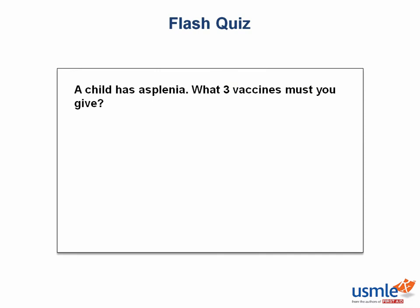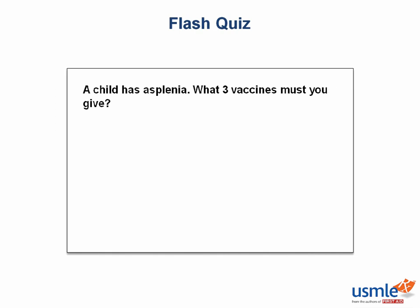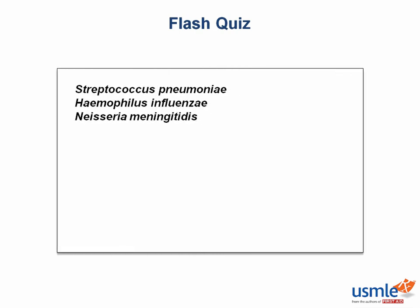Time for a flash quiz. We have a child with asplenia — what three vaccines do you want to make sure you give this patient? The answers are Strep pneumo, H-flu, and Neisseria meningitidis. Remember, patients without a spleen are susceptible to infection by encapsulated bacteria, so you'll have to vaccinate them to protect against these bugs.